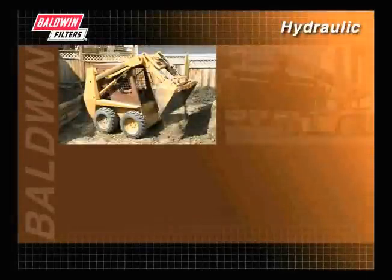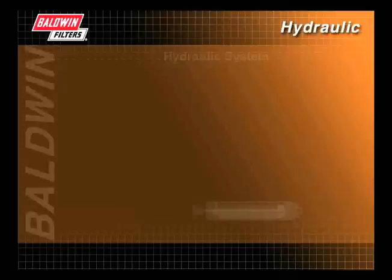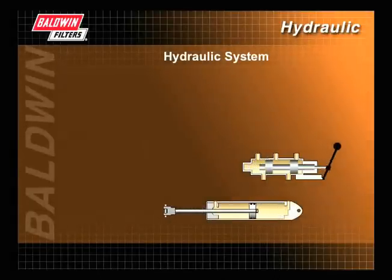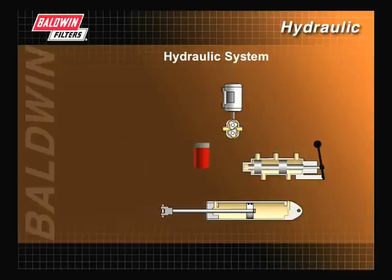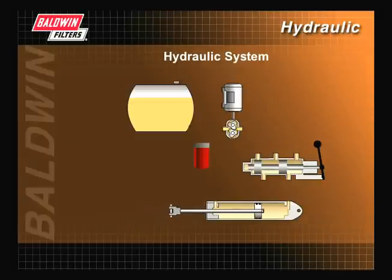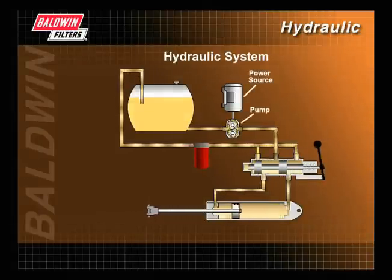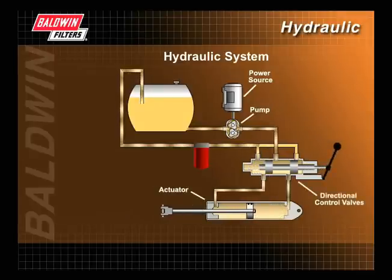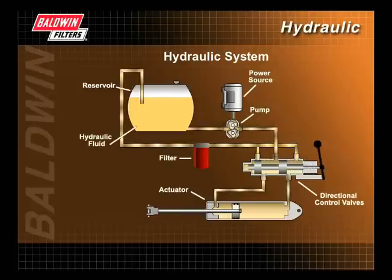Hydraulic systems come in many configurations and can be simple or complex. To understand how the hydraulic system works, let's take a look at a typical hydraulic system. The primary components of a hydraulic system are a power source, a pump, the actuator, the directional control valves, the reservoir, the hydraulic filters, and the hydraulic fluid.